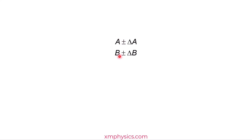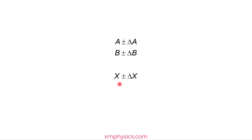Let's say we have two measurements, A and B, with uncertainties of delta A and delta B, and we use the measured values to calculate X. What would the uncertainty of X be? In other words, how would the uncertainties of A and B propagate to become the uncertainty of X?